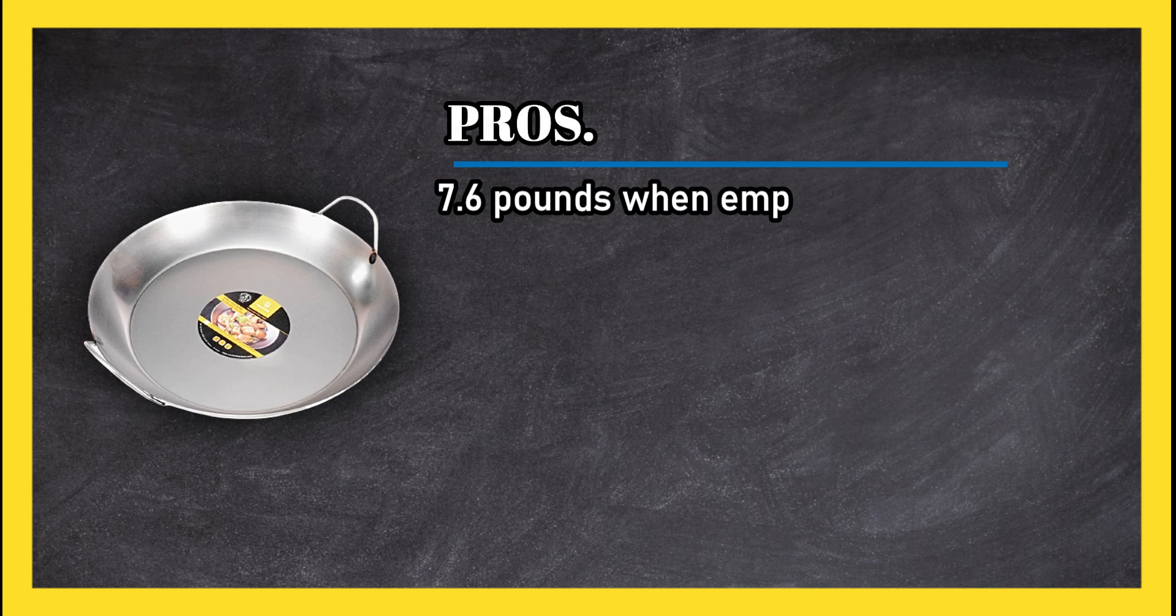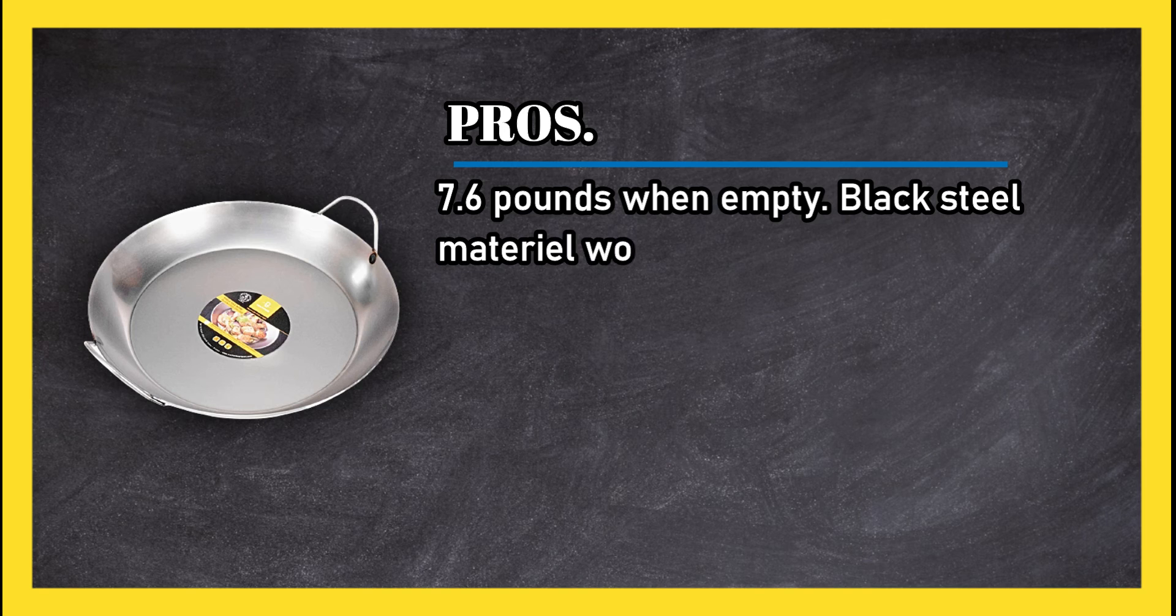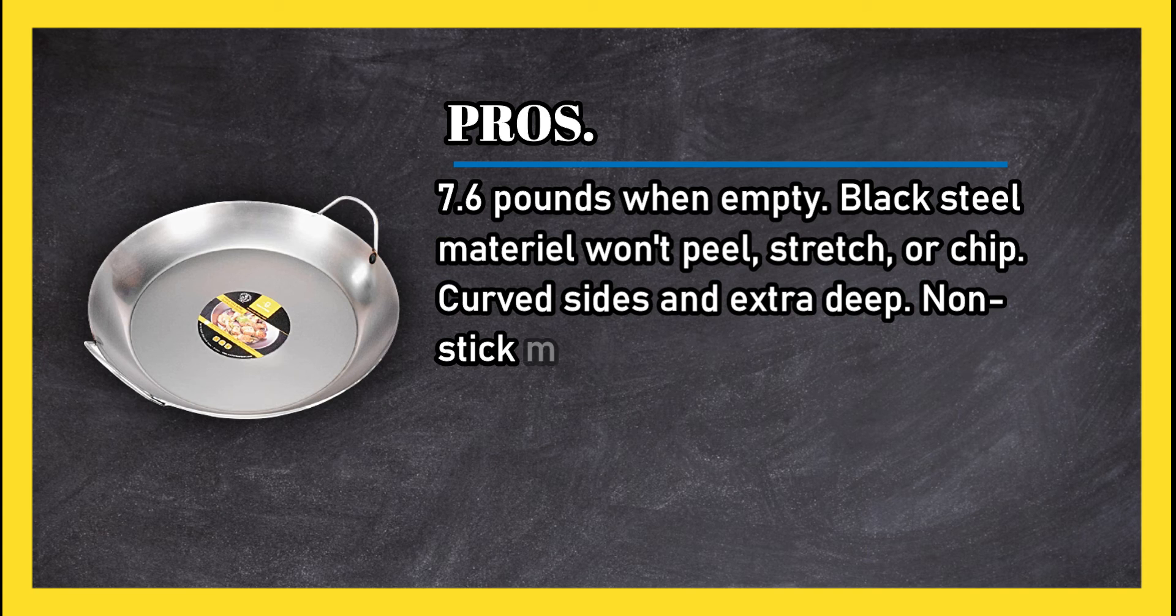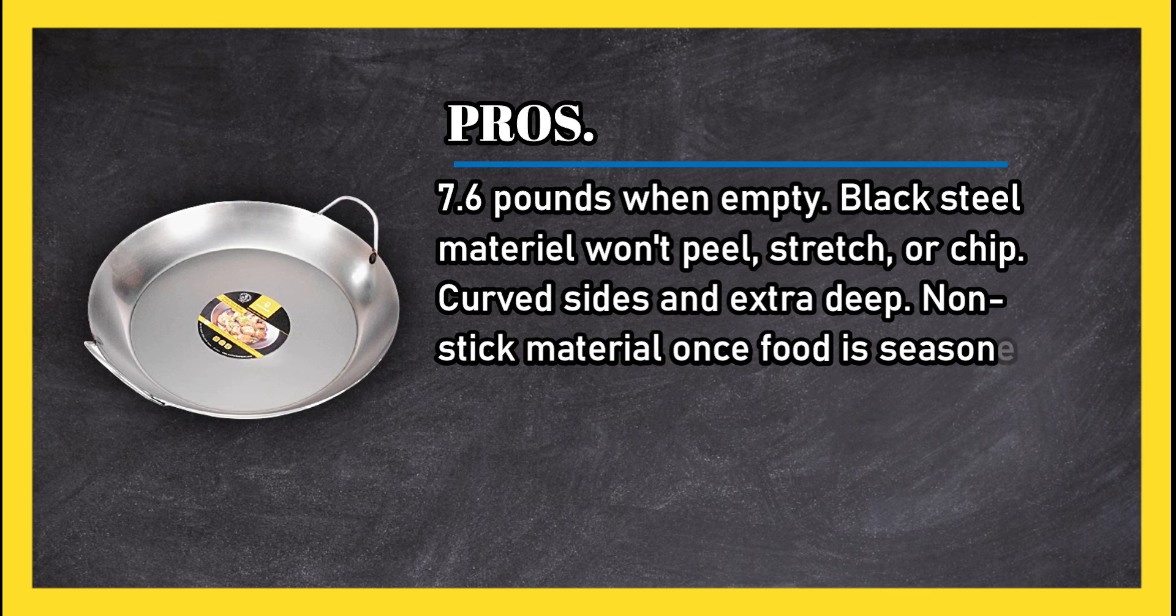Pros: 7.6 pounds when empty, black steel material won't peel, stretch, or chip, curved sides and extra deep nonstick material once food is seasoned, handles are designed to withstand high temperatures, can be used on all heat sources.